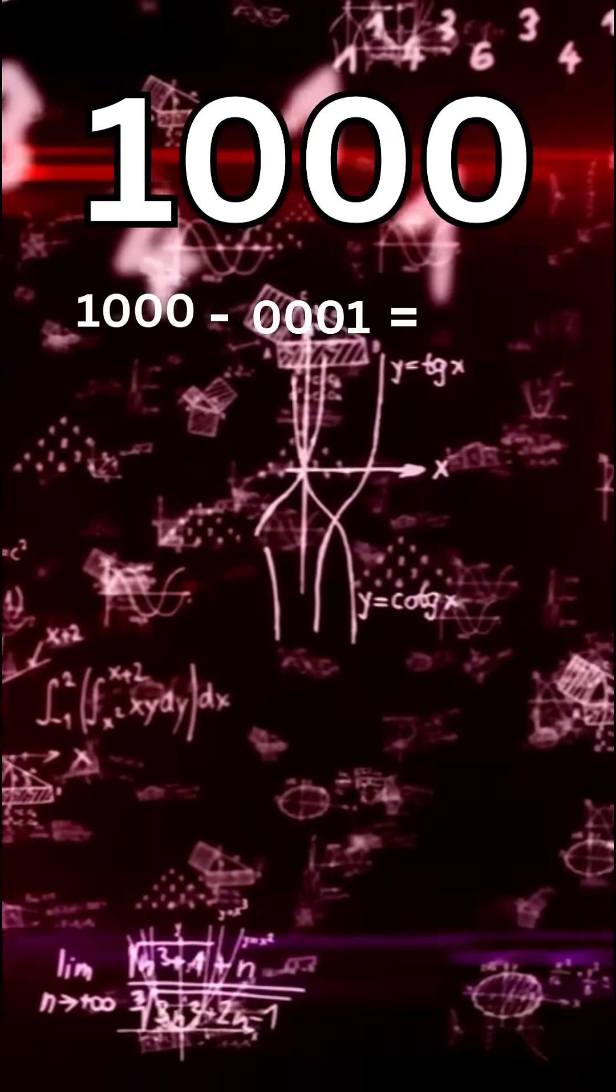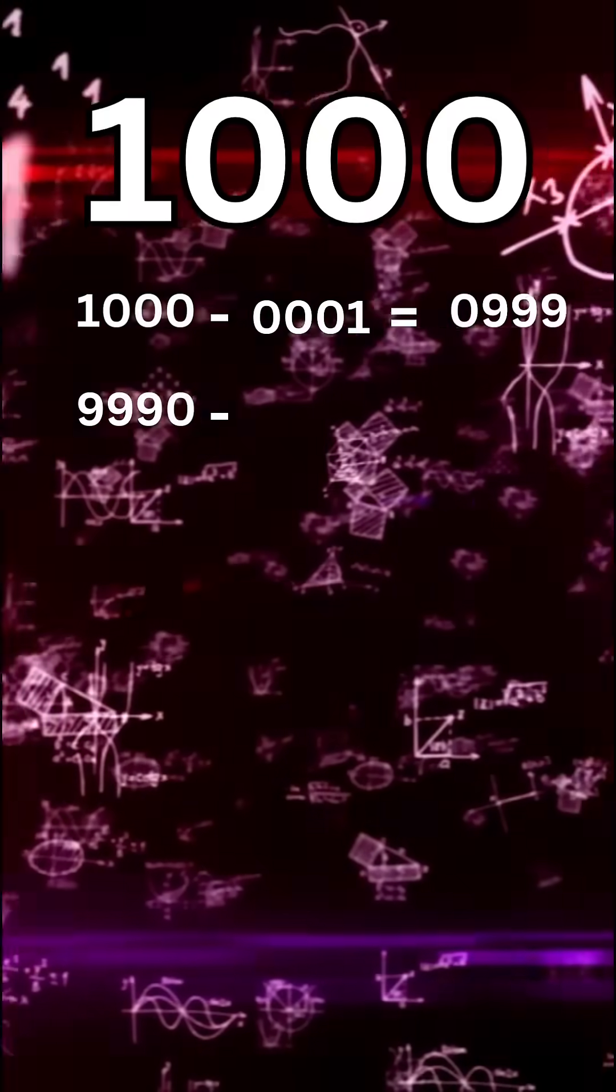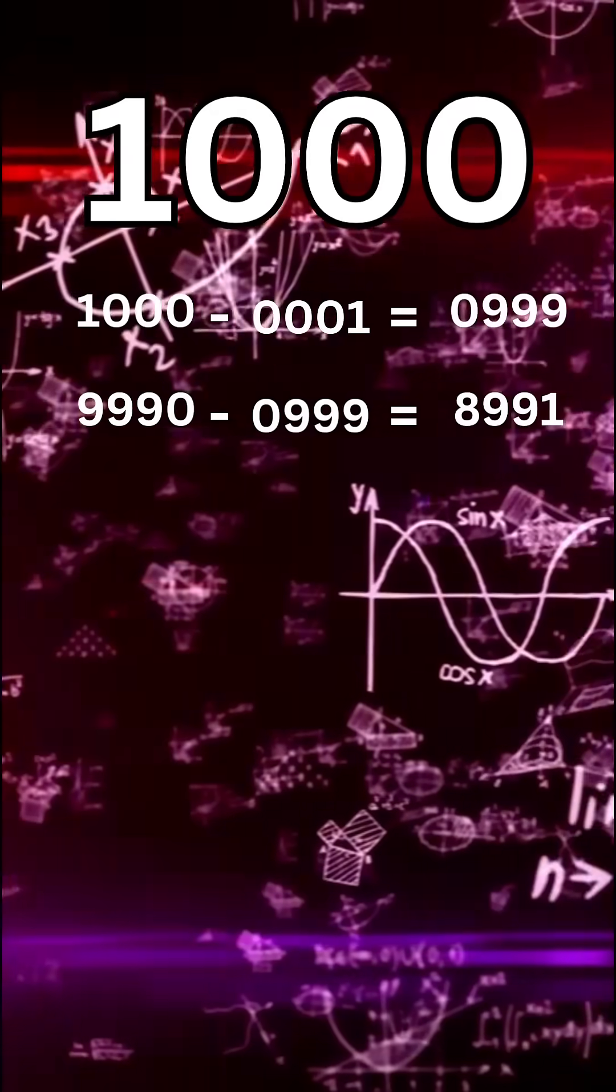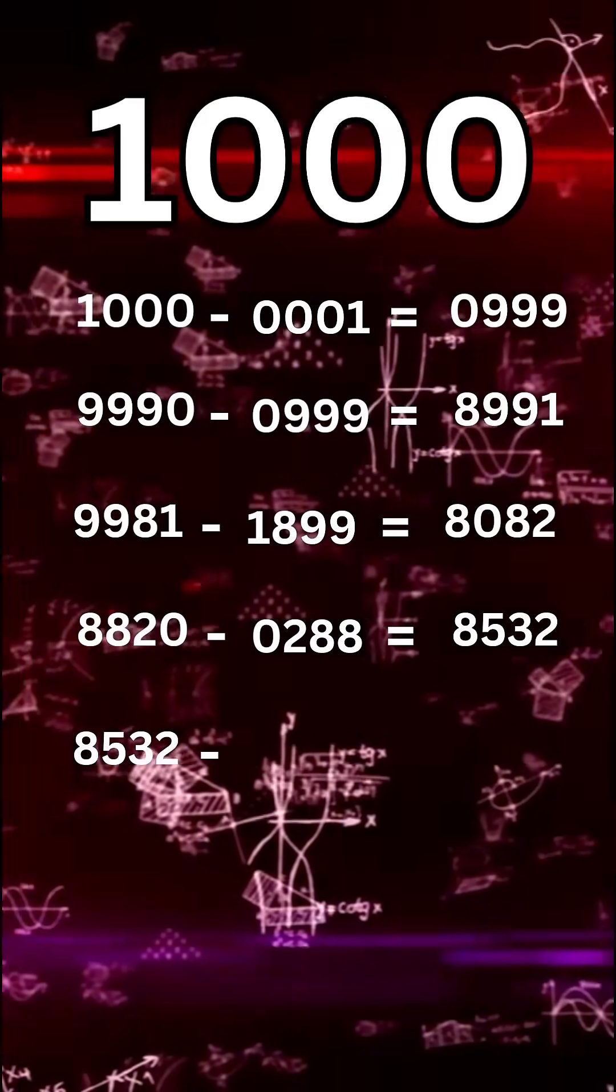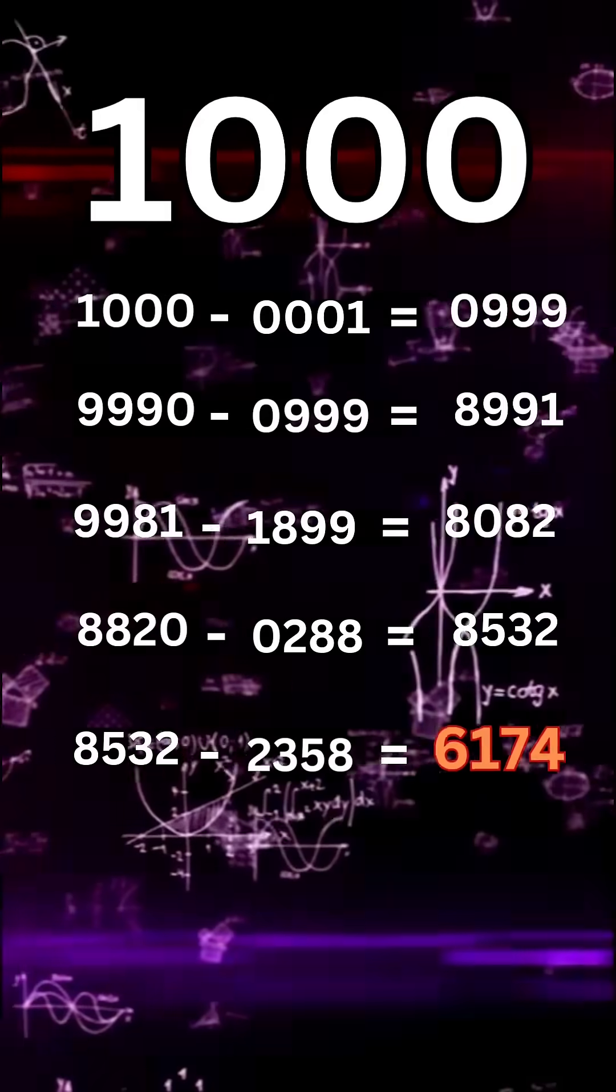Now number 1000. 1000 minus 0001 equals 0999. 9990 minus 0999 equals 8991. 9981 minus 1899 equals 8082. 8820 minus 0288 equals 8532. 8532 minus 2358 equals 6174.